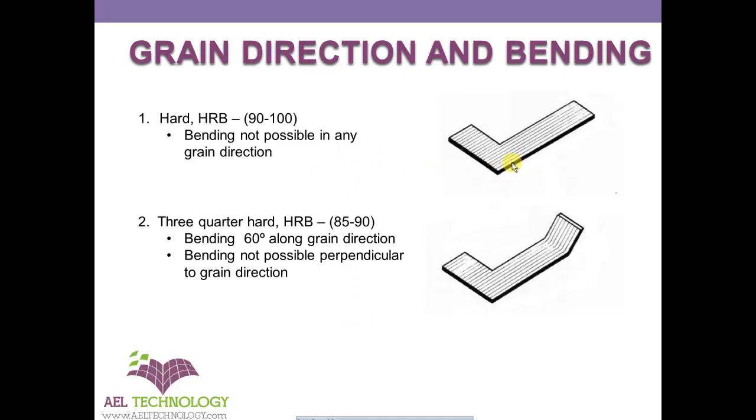Next is three quarter hard material whose Rockwell B scale is between 85 to 90. It's possible to bend 60 degrees along the grain direction, and it's almost impossible to bend perpendicular to the grain direction.